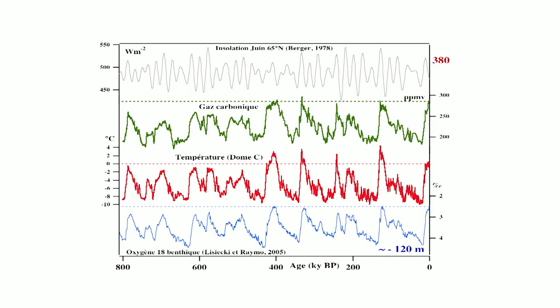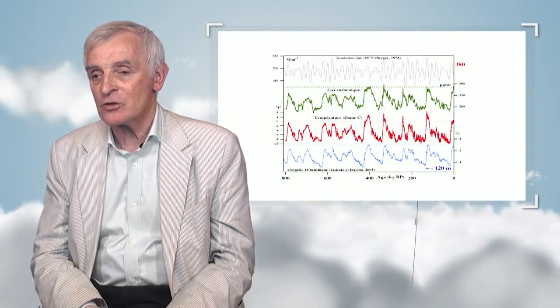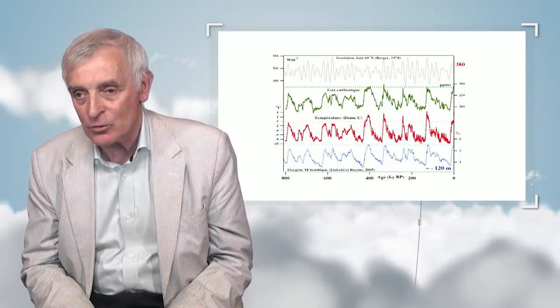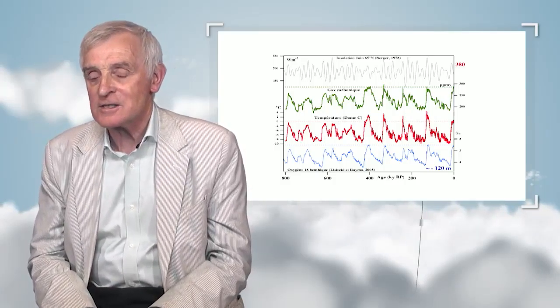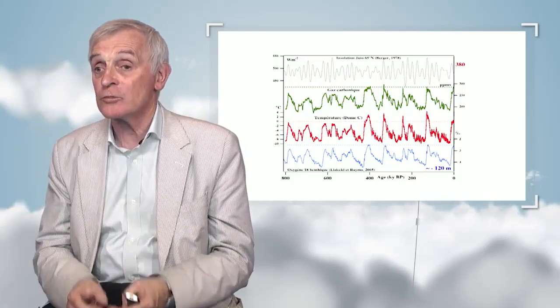We can also show that we are currently experiencing an exceptional period: 400 ppm of CO2, a 40% increase in the quantity of CO2 in the atmosphere over the last 200 years. This record allows us to say that the values we are reaching today have never been reached during the last 800,000 years. We can establish the link between greenhouse gases and climate, which is very important to understand the role of the greenhouse effect in climate warming. However, the greenhouse effect does not control the alternation between glacial and interglacial periods.